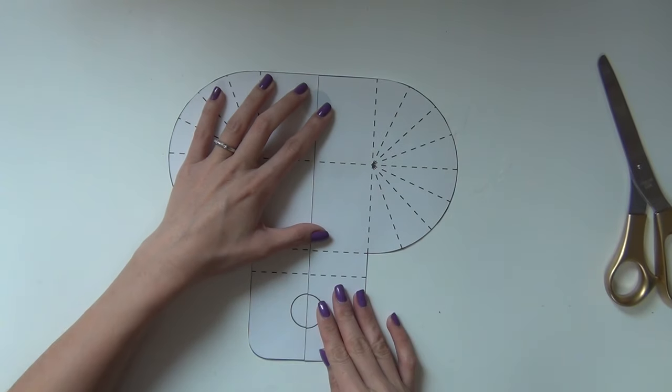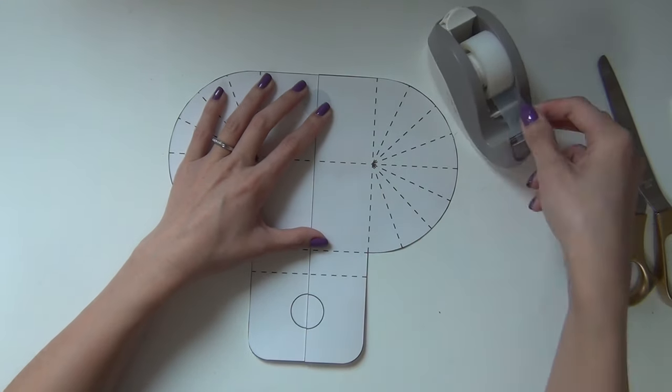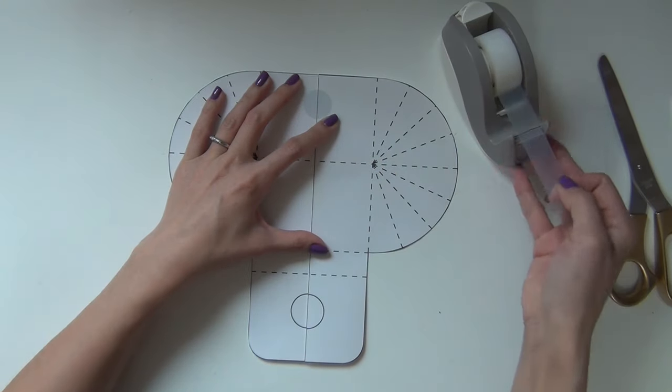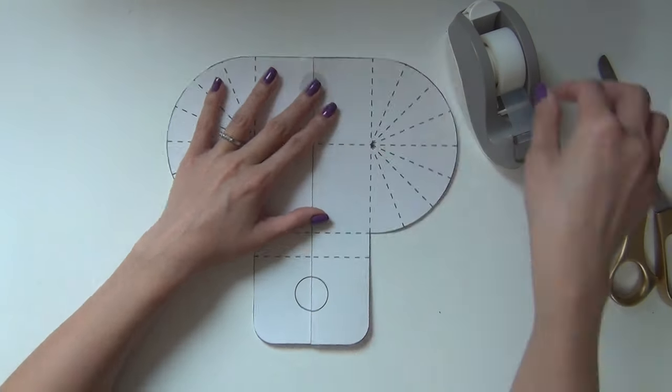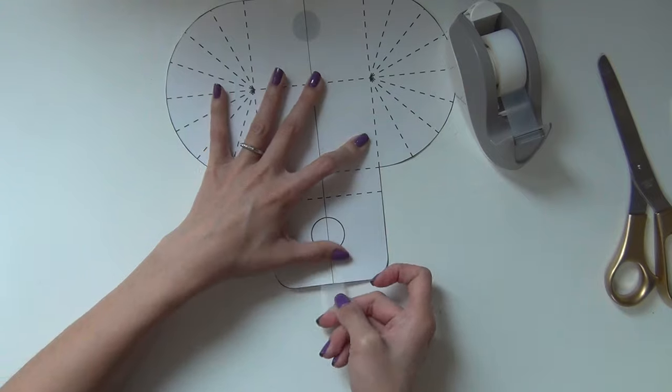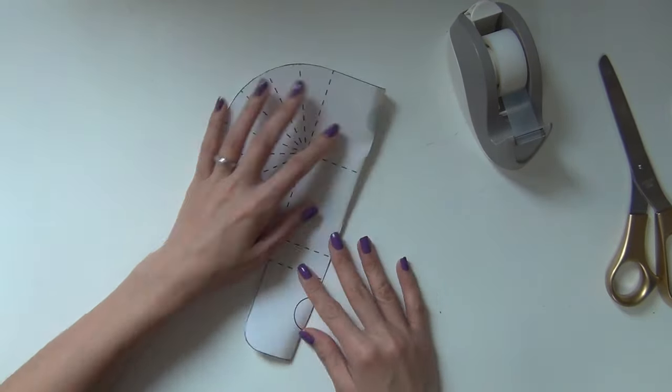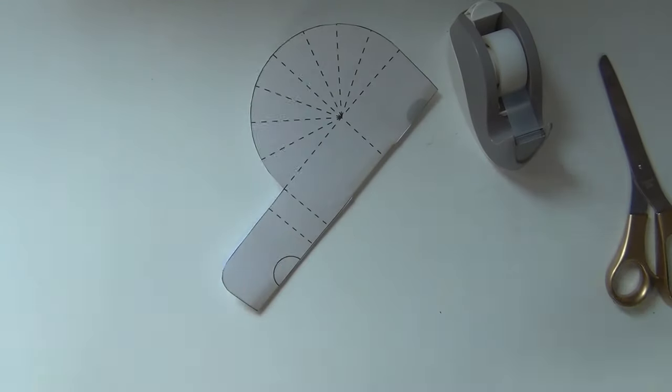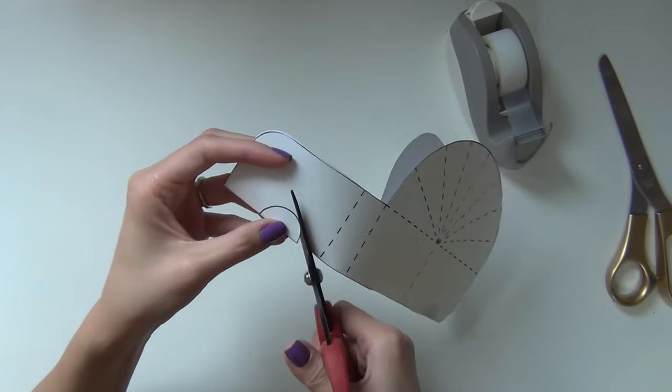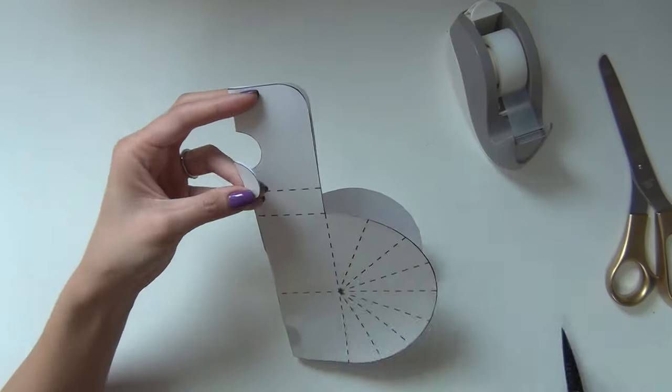Once you're done cutting out the two pieces, you would want to line them up against each other like this and use a few small pieces of tape to attach them together. To cut out the circles easily, you can just fold the pattern in half and follow the lines that are drawn.